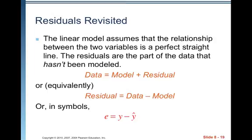Residuals revisited. The linear model assumes that the relationship between the two variables is a perfect straight line. The residuals are the part of the data that hasn't been modeled. It's like the residue. It's what's left over. So the actual data value equals the model plus the residual. Or, equivalently, if we subtract model from both sides, residual equals data minus model.